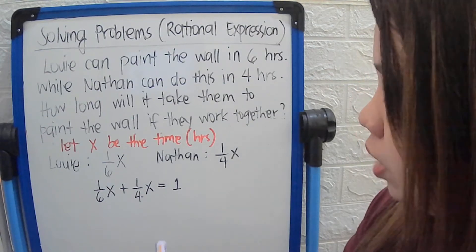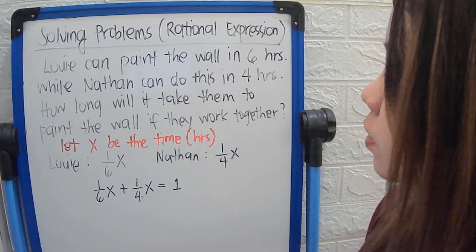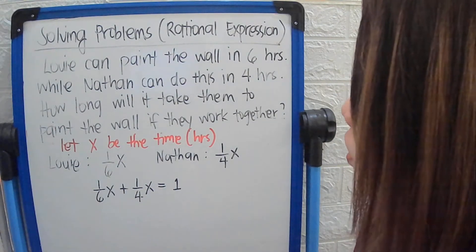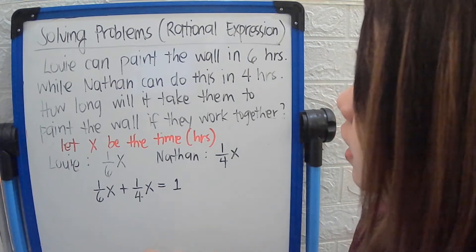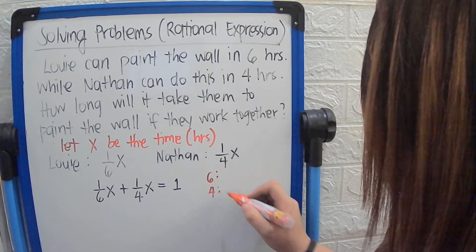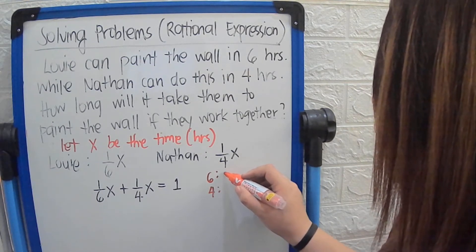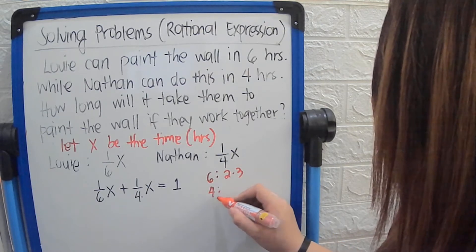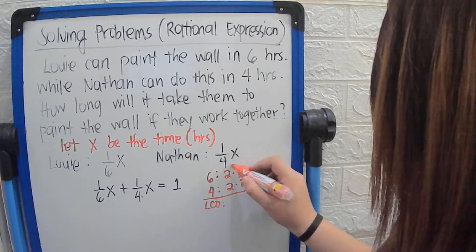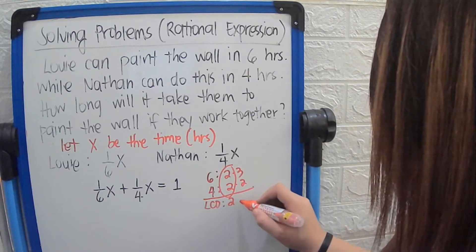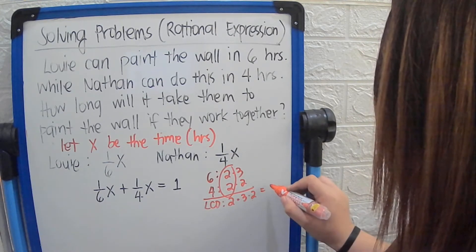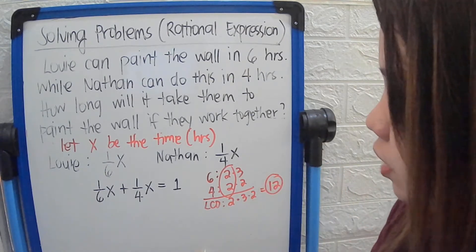Now, what we're going to do is make the whole equation have no fractions. We will look for the LCD of 6 and 4. The prime factors of 6 are 2 and 3. The prime factors of 4 are 2 and 2. To get the LCD, we take 2, then the other factors 3 and 2, giving us 12. So 12 will be your LCD.